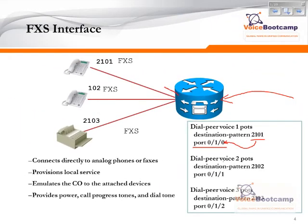The router sends a voltage on the port, which comes across the cable into the phone and generates enough power to ring the phone. When the user answers the call, the loop through which the current is flowing gets closed, and the call is connected.